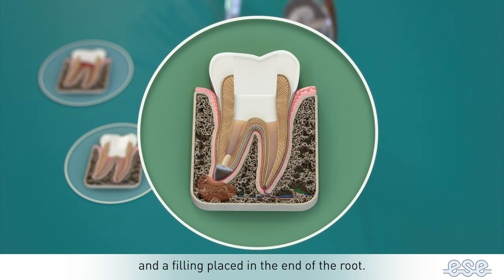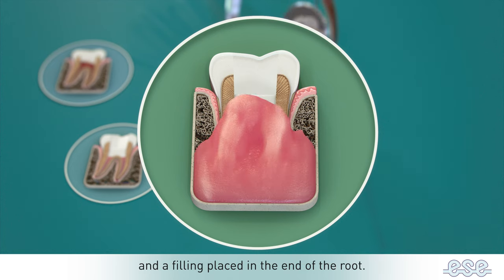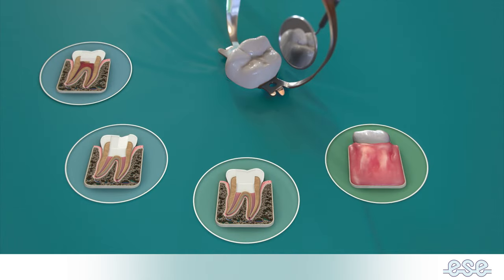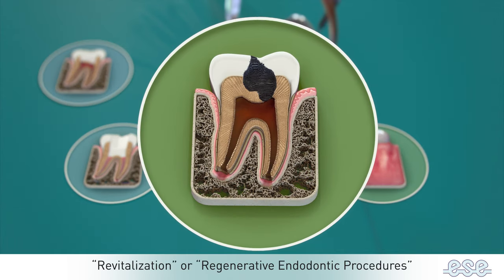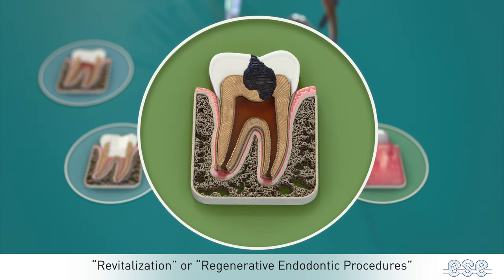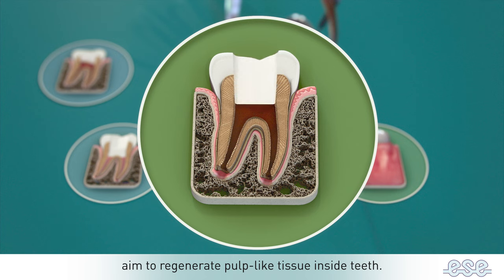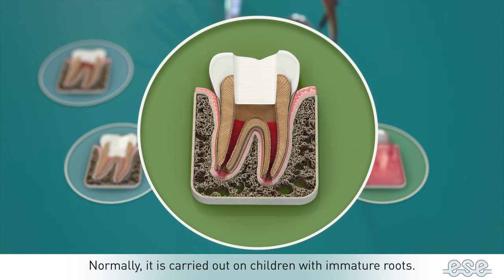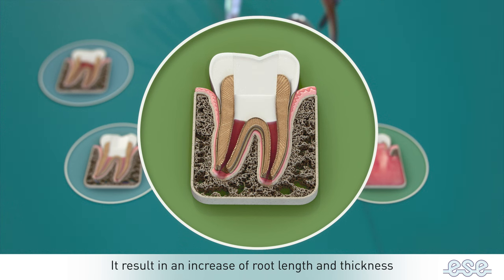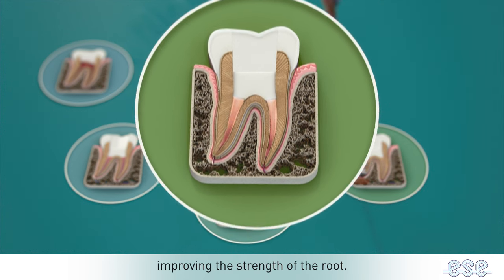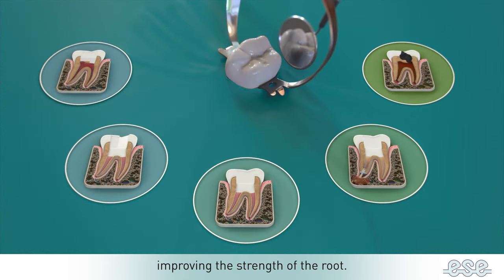The infected apex of the root is removed and a filling is placed in the end of the root. Revitalization, or regenerative endodontic procedures, aim to regenerate pulp-like tissue inside teeth. Normally carried out on children with immature roots, it results in an increase of root length and thickness, improving the strength of the root.